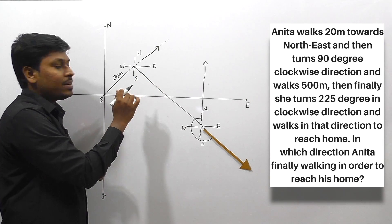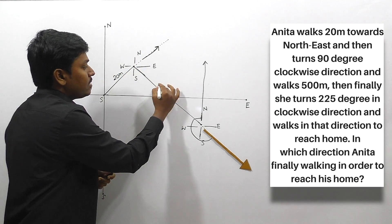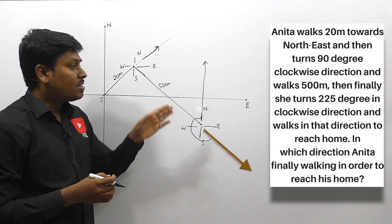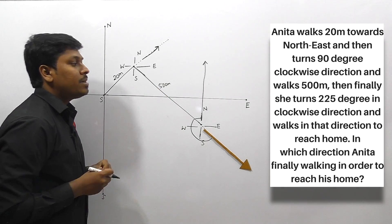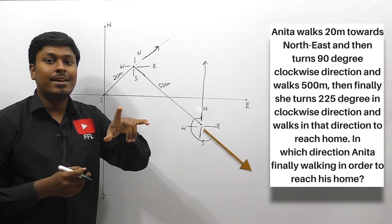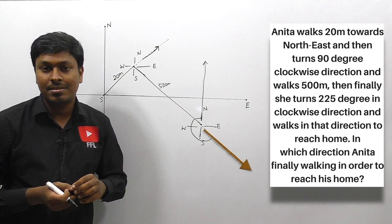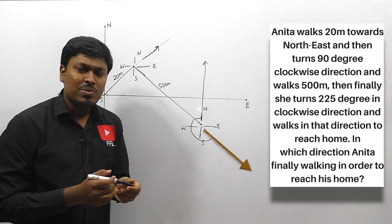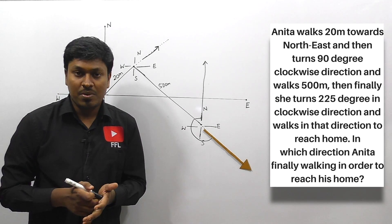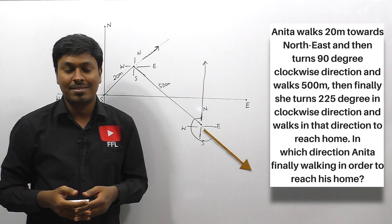The two key regions in this question are: after walking 20 meters she turns 90 degrees clockwise, and after walking 500 meters she turns 225 degrees clockwise. Always remember that if you find a question like this in your exams, just draw a small dotted line which indicates the direction a person is facing, then turn anti-clockwise or clockwise so that you can easily get the answer. Thank you so much — though it's a small video, I hope you have learned a new concept. Share this video with your friends so they can also learn this. Bye!